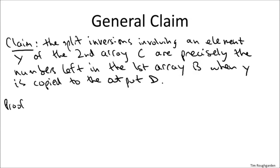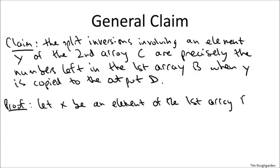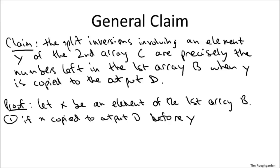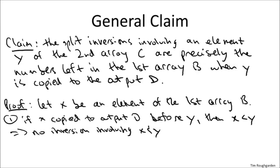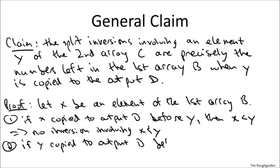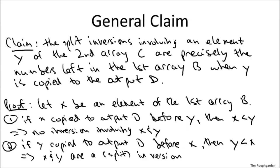What's the general argument? It's quite simple. Fix a particular element X from the first half of the array, and examine which elements Y from the second half are involved in split inversions with X. There are two cases depending on whether X is copied to output D before or after Y. If X is copied before Y, then since the output is in sorted order, X must be less than Y — no split inversion. On the other hand, if Y is copied before X, then Y must be less than X, but X is still in the left array so it has a smaller index than Y, which comes from the right array — so this is indeed a split inversion. Therefore, the elements X in array B that form split inversions with Y are precisely those that get copied to the output after Y — exactly the number of elements remaining in B when Y gets copied over. That proves the general claim.